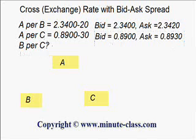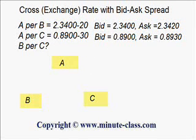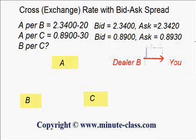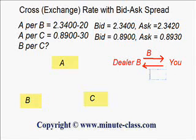So the question is: what is B per C? How do we solve this problem? Let's start with the bid price offered by the dealer in country B. The dealer will give you currency B, and in return you give them currency C. The rate between B and C must be at equilibrium — neither too high nor too low — and this equilibrium point is found by identifying any arbitrage opportunity.